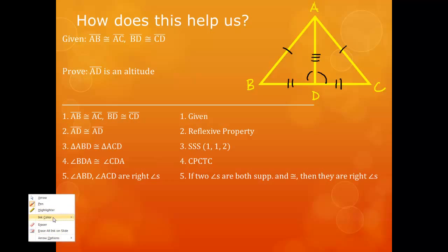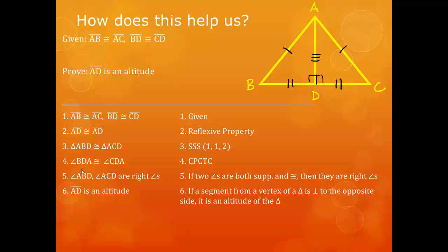So let's make a little bit of a correction there. Replace those lines with these. Okay. And finally, we can say that segment AD is an altitude, because if a segment from a vertex of a triangle is perpendicular to the opposite side, it is an altitude of a triangle.